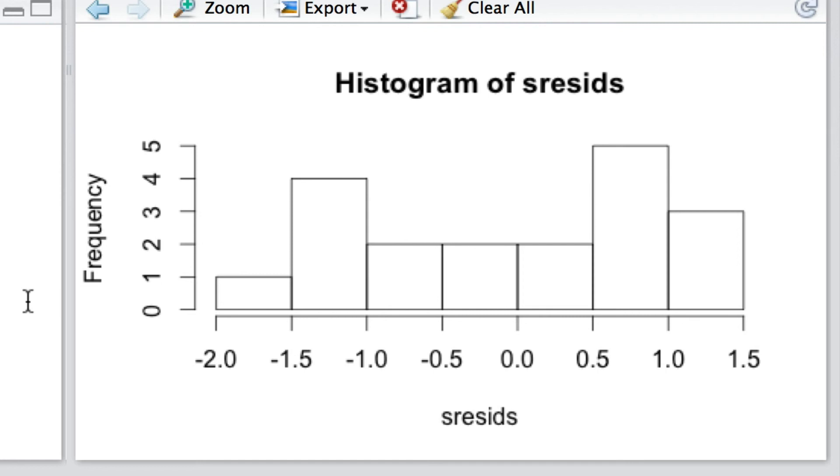So if we were going to make important inferences about that population other than treat this as a simple teaching exercise, then we would have to do something about that problem of lack of normality. And of course we'll get on to those sorts of problems later on.